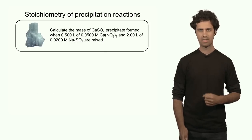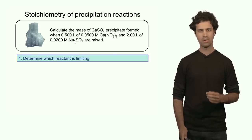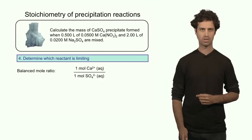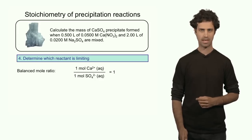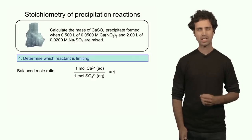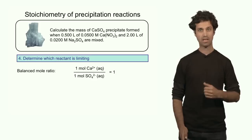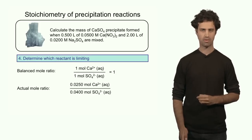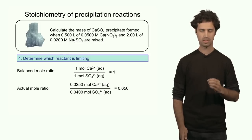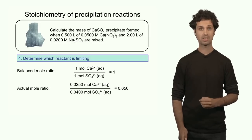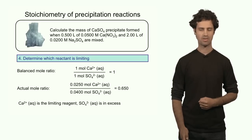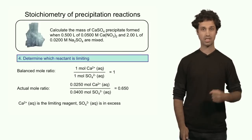The next step is to determine the mol ratios. The mol ratio from the chemical equation is 1 mol of calcium for each 1 mol of sulfate — that is 1 to 1. The actual ratio is 0.025 moles of calcium to 0.04 moles of sulfate, which is 0.625 — less than 1. That means the numerator, calcium, is the limiting reagent, and sulfate is in excess.